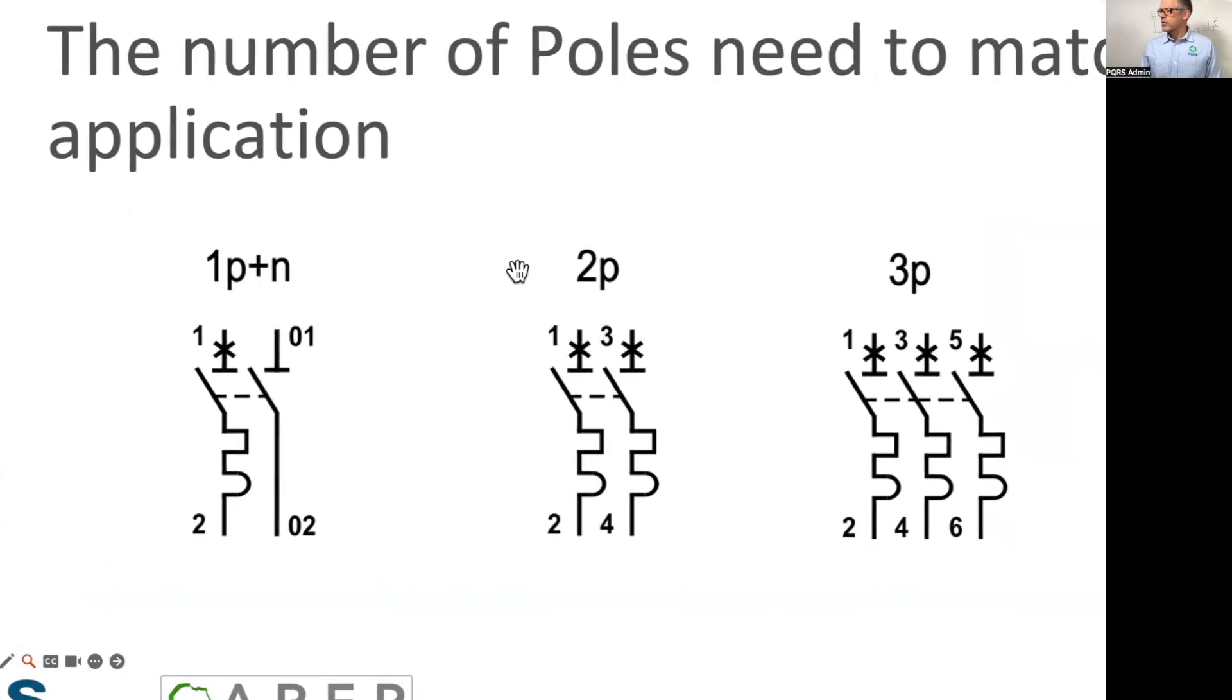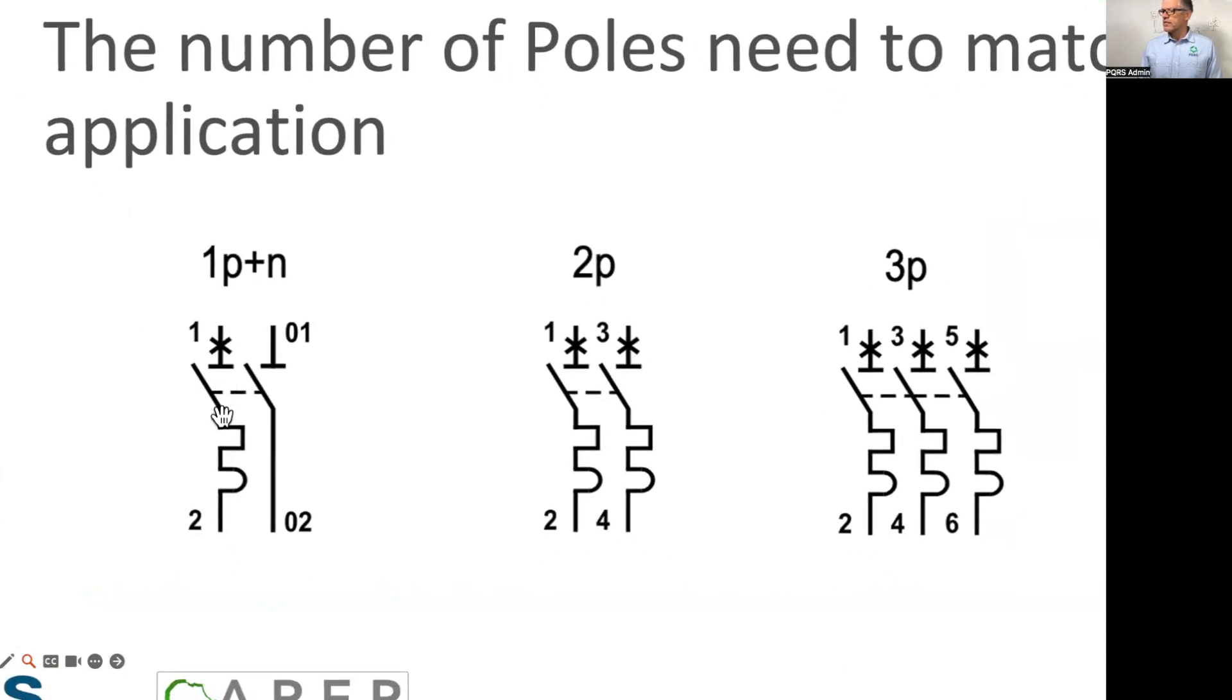You get from this manufacturer a different one where just the one would be protected and the other one would just be—see there's no cross on top. So the second pole on the right hand side does not have a circuit breaker function. It would still have a lever that goes across both poles.